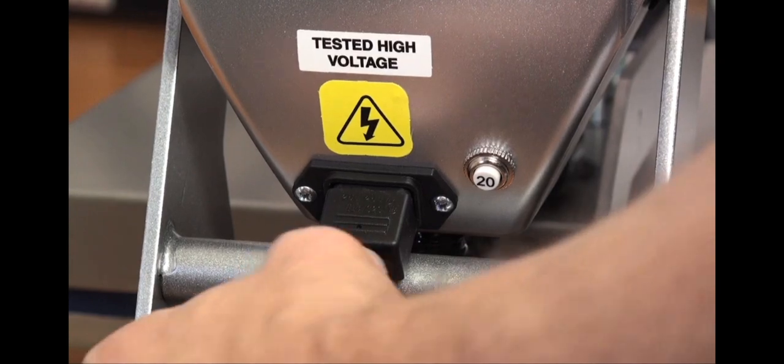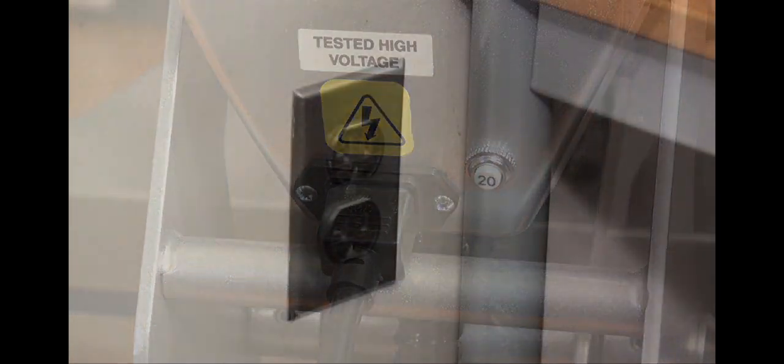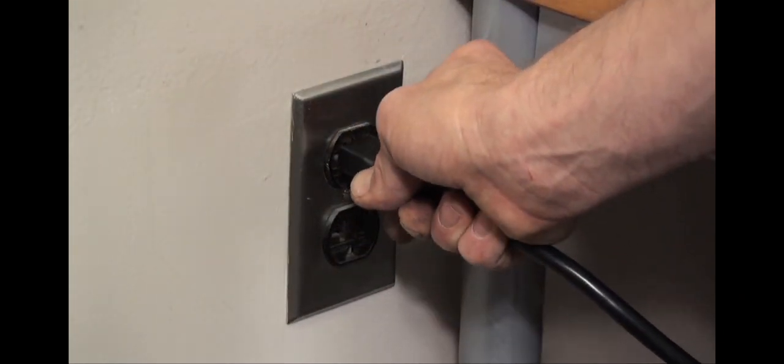Plug the power cord into the back of your press and the other end into an outlet protected by a dedicated 20 amp breaker.